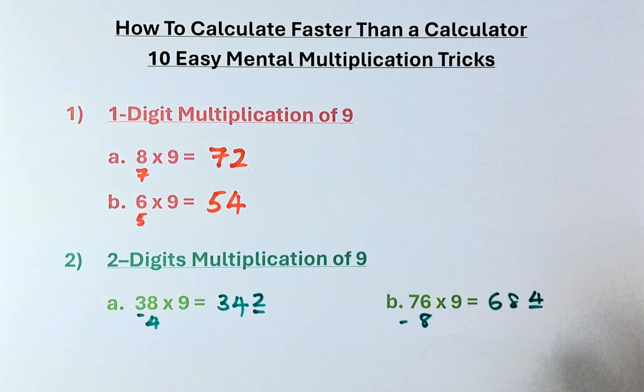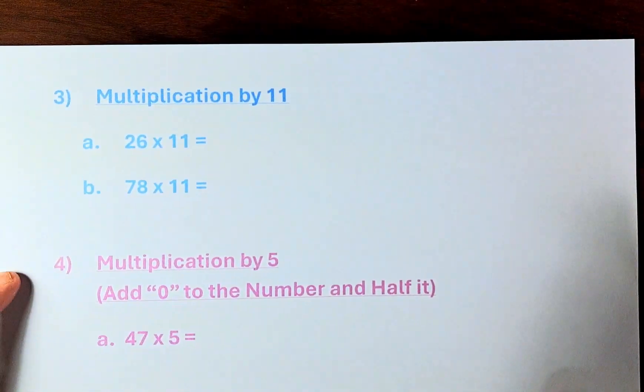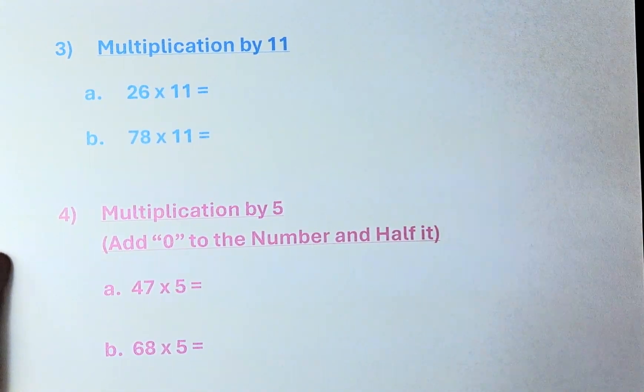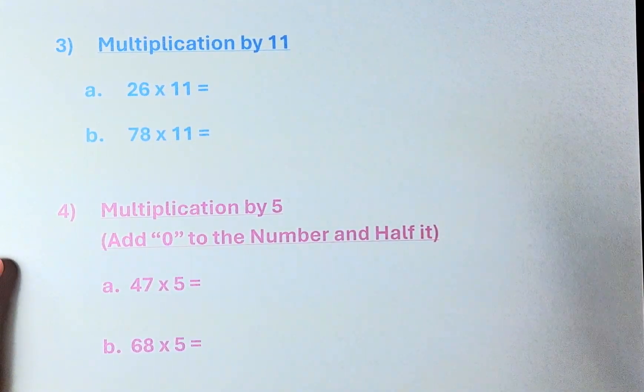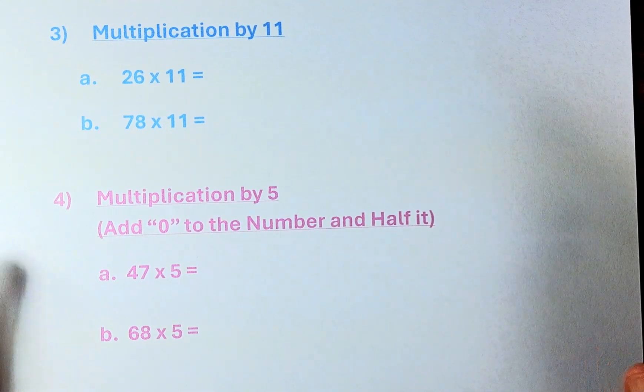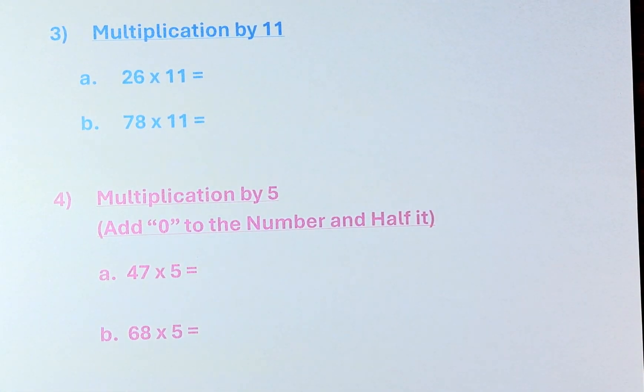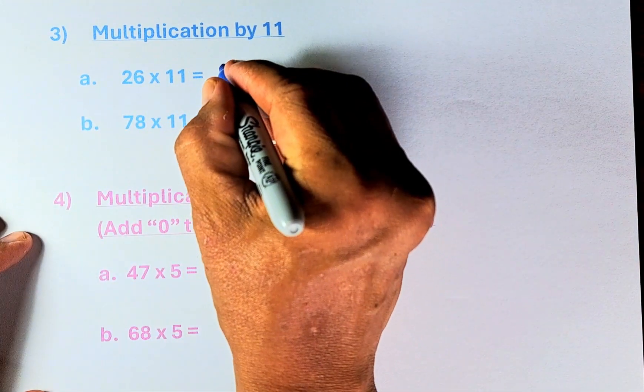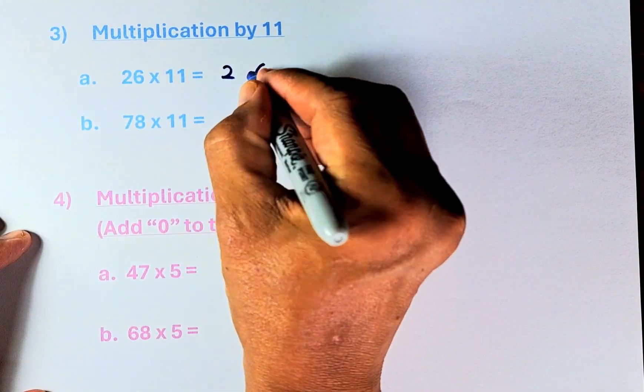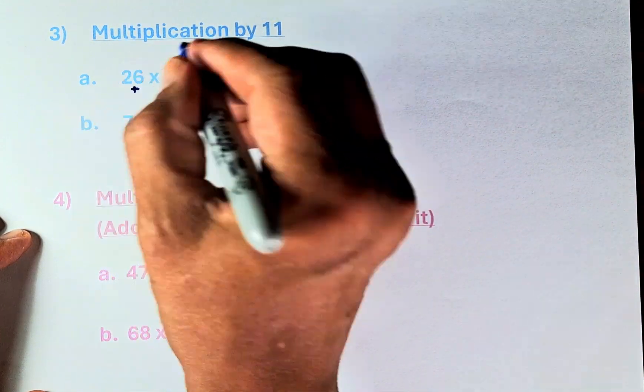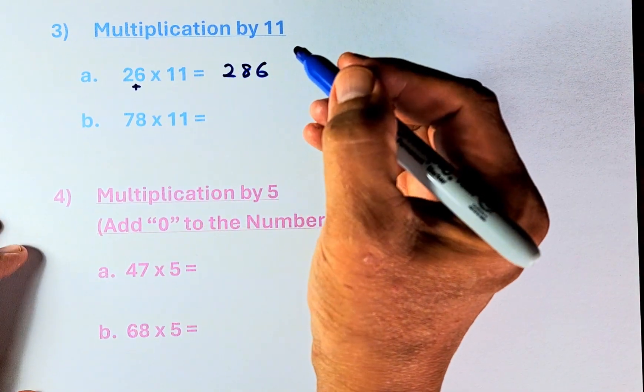So we shall continue and do question 3. Multiplication by 11. I'm sure you know this by now. To multiply by 11, the 2 digits remain the same. So 2 and 6 remain the same. And then you add 6 plus 2, and the middle number is going to be 8.